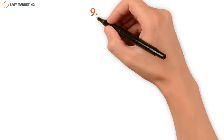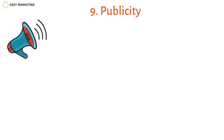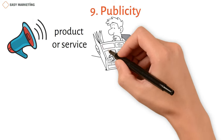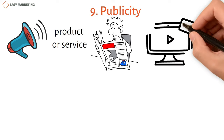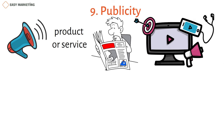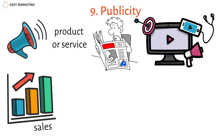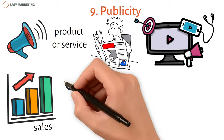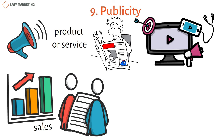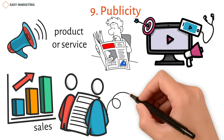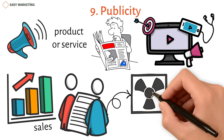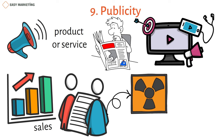Number nine: publicity. Publicity is one of the best ways to get the word out about a product or service. It means that magazines, newspapers, TV shows, and other forms of media talk about your products. This can boost sales and help people remember your brand right away. You can get a story published using your connections with local journalists, but this kind of communication is also very dangerous because you don't have control over what's in the news, and it could get bad press.